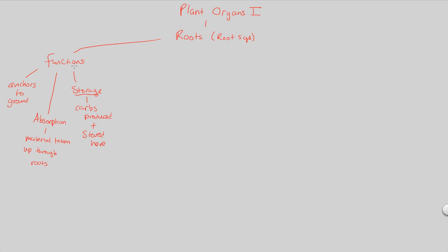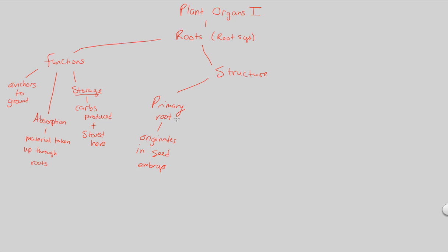Those are the main functions of roots. Now with functions, you always want to look at structure as well, because structure plays a big role in how the root, as a plant organ, functions. The first structural element to understand is the primary root. A primary root is something that originates in the seed embryo — it's really the first root ever, the young and fully developed root of a young plant. From this structure, we get other parts of the overall root system.